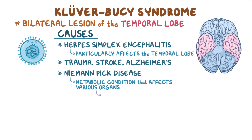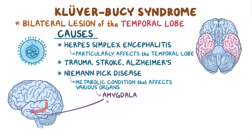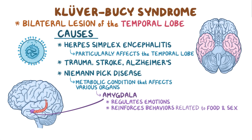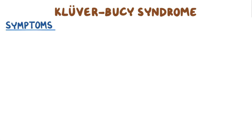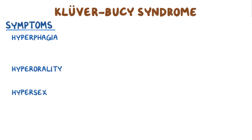The damage affects the amygdala, which is a part of the brain that regulates emotions and reinforces behaviors related to food and sex. Amygdala damage also causes a diminished fear response. With that in mind, there are three main symptoms caused by Kluver-Busey syndrome: hyperphagia, hyperorality, and hypersexuality.